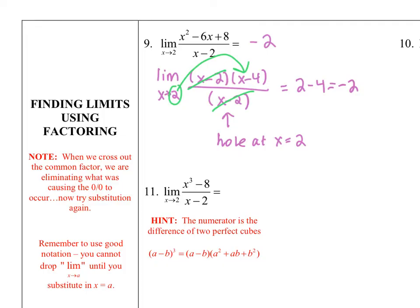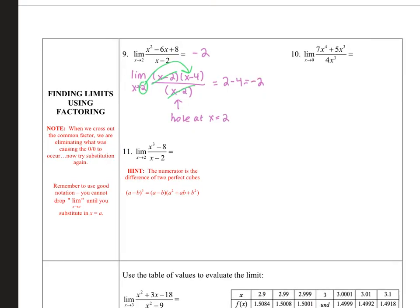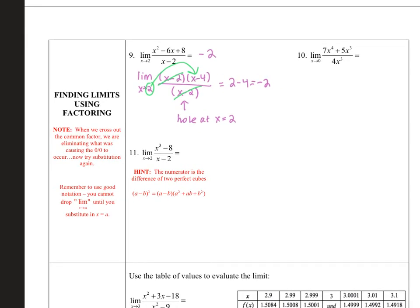I also want you to pay attention to the notation that I use. Notice that when I rewrote this step, this factoring step, the limit as x approaches 2 was still there. You do not drop this limit notation until you actually do your substitution. So notice when I hit this next step is when I did not write the limit as x approaches 2 any longer. Go ahead and try number 10 and number 11, and I've given you a hint on number 11 that there is factoring the difference of two perfect cubes. If you forgot what the formula is, I've got it down here. So give those a go, and then we'll talk about them.